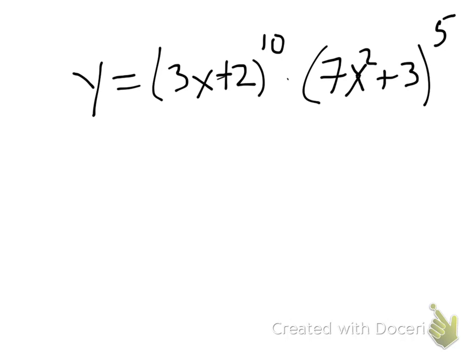So I can multiply all that out, but that would take a very long time. So instead, think of all of this as my A and all of this as my B for the product rule.